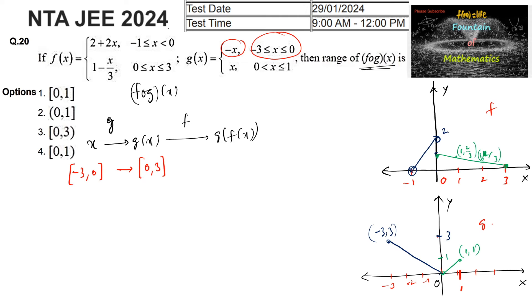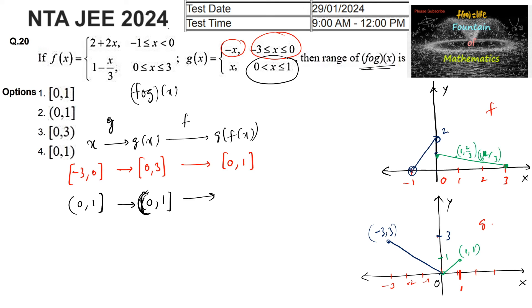When the x value is in 0 to 3 and we apply the first function f, from 0 to 3 the range of f is from 0 to 1. In the second case, when x lies between 0 and 1, from 0 to 1 the range of g is again 0 to 1. And applying f, we can see the portion of the graph from 1 comma 2 by 3 down to 1, so the range is 2 by 3 to 1.